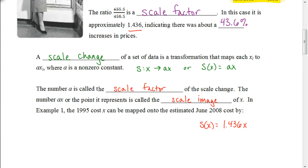We could refer to this as a scale change. We're multiplying our x value in this case by whatever our scale factor is. We refer to that scale factor as our value for A. And when you do that, we could end up getting an equation. Here I have S(x) equals 1.436 times x. This would be an equation I could use to estimate the price in 2008 of any item if I knew the price in 1995.